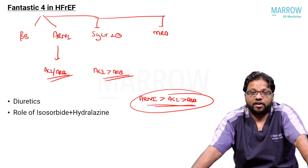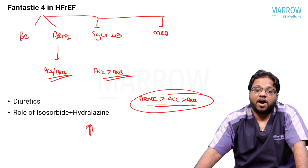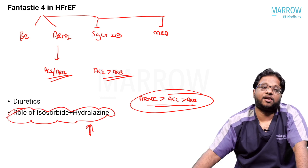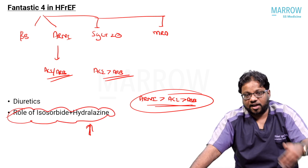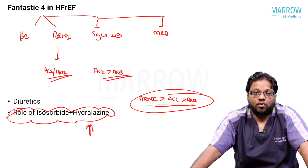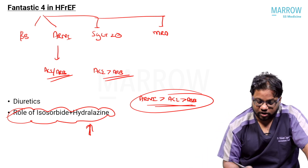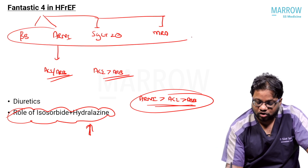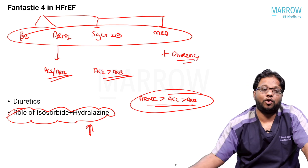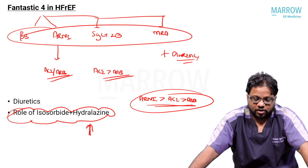Almost all Stage C symptomatic HFrEF patients should be on these four drugs unless contraindicated. If the patient has renal failure, you cannot give ACE inhibitors, ARBs, or ARNI; in that case, give isosorbide dinitrate with hydralazine combination — distinctly inferior to the above three agents but the vasodilator of choice in renal failure. All patients should also be on a diuretic for congestion — loop diuretics like furosemide or torsemide are preferred, though thiazide diuretics can also be used.